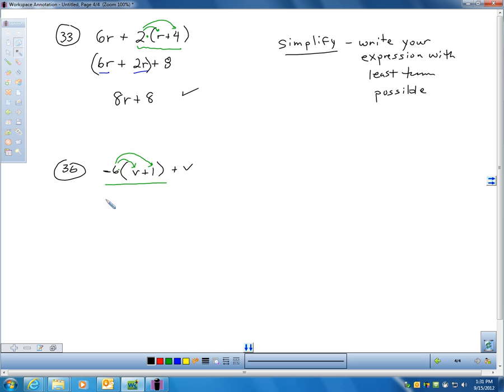So, let's do that. Negative 6 times V is negative 6V plus I got negative 6 times 1, which is negative 6, plus I still have this V. I don't distribute here, this was not in the parentheses. What's in the parentheses is what needs to be distributed, not outside. I do not want to multiply here times here.